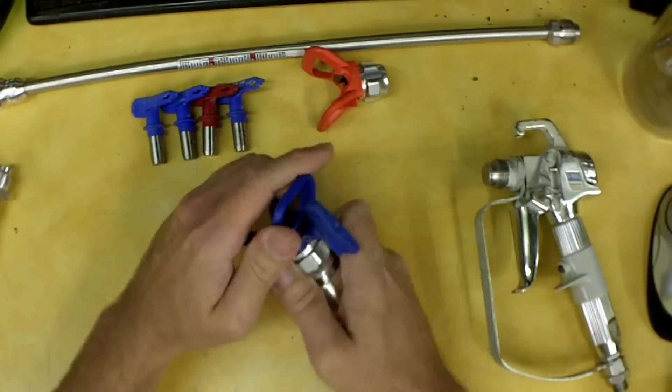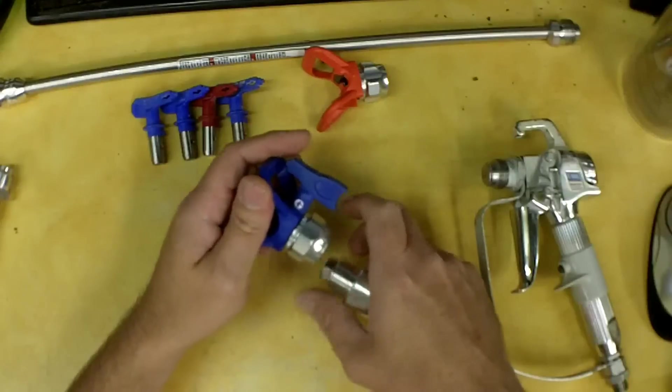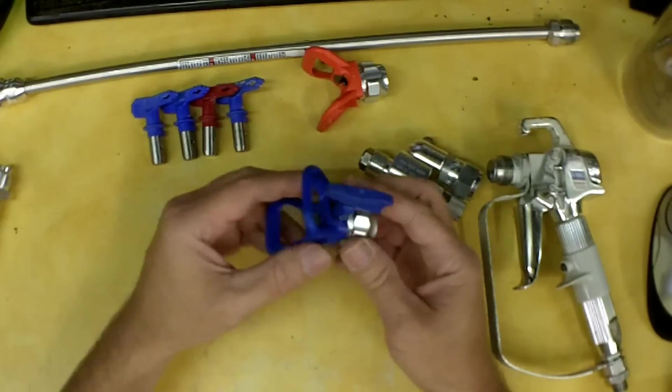This came with a Graco RackX guard and tip in it. This is a 517 tip, which means it shoots a 10-inch fan and it has a 17-thousandths orifice.